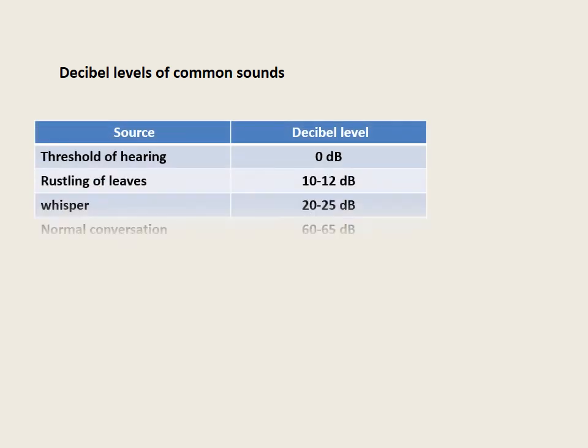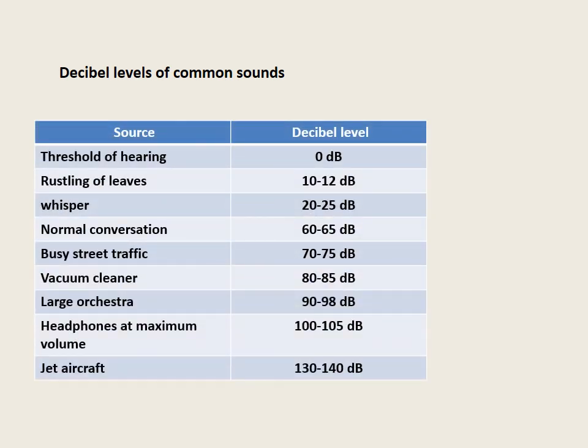Decibel levels of common sounds. Threshold of hearing starts from 0 dB. Rustling of leaves: 10–12 dB. Whisper: 20–25 dB. Normal conversation: 60–65 dB. Busy street traffic: 70–75 dB. Vacuum cleaner: 80–85 dB. Large orchestra: 90–98 dB. Headphones at maximum volume: 100–105 dB. Jet aircraft: 130–140 dB. Busy street work: 120 dB.